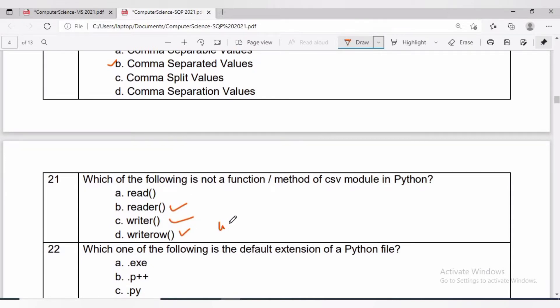Question 21: which of the following is not a function or method of CSV module in Python? To write CSV, use writer, writerow, and writerows. To read CSV, use the reader function. Read is used to read an entire text file. Answer is option A, which is read.